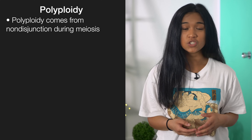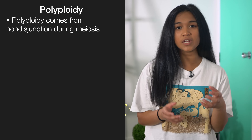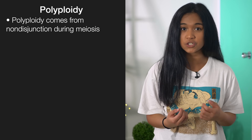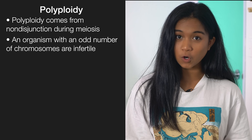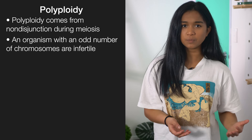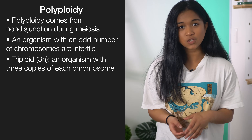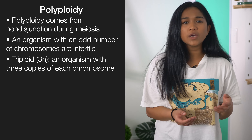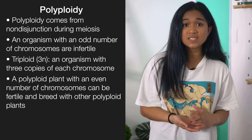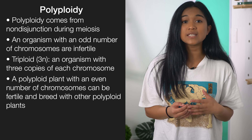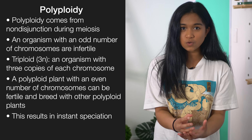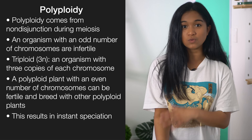A concept that commonly trips students up year after year is polyploidy. Polyploidy comes from non-disjunction during meiosis, which is basically when chromosomes don't split up evenly during cell division, so one gamete gets all the chromosomes. An organism with an odd number of chromosomes is infertile — for example, a triploid can't reproduce, so a new species can't be created. Whereas a polyploid with four, six, or eight sets of chromosomes can reproduce with another polyploid and a new species can be created. This is called instant speciation, where this new thing that's created has an entirely new genome.